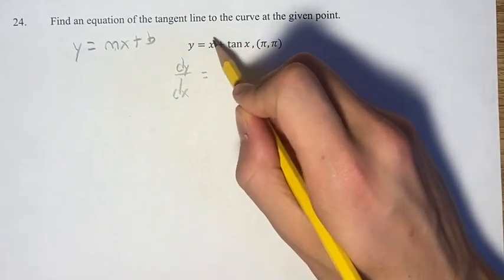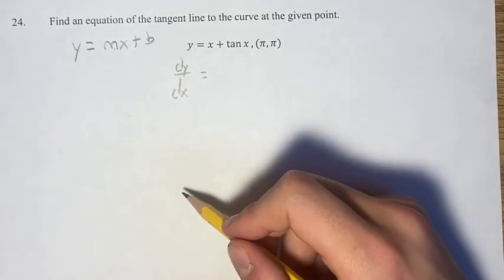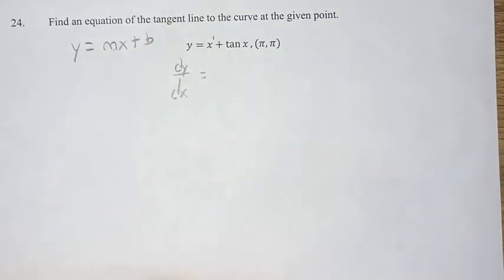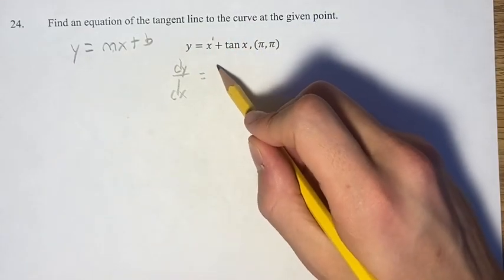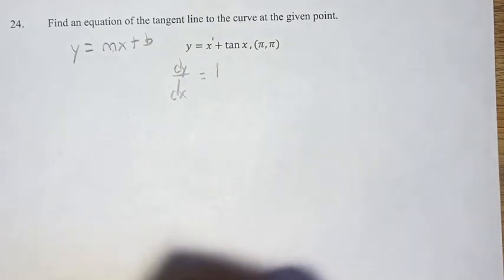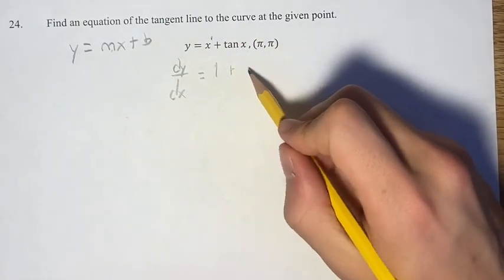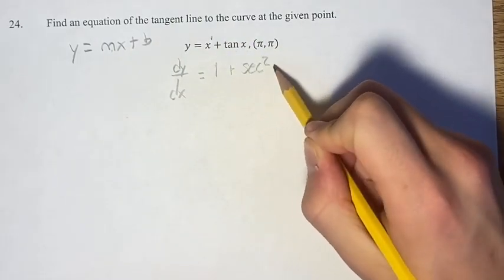The derivative of x - well, x is a linear term, it's x to the first power, so its derivative is just its coefficient. But what is the coefficient of x? Well, this is just 1x, so its derivative, its coefficient, is just 1, plus the derivative of tangent we know is secant squared x.